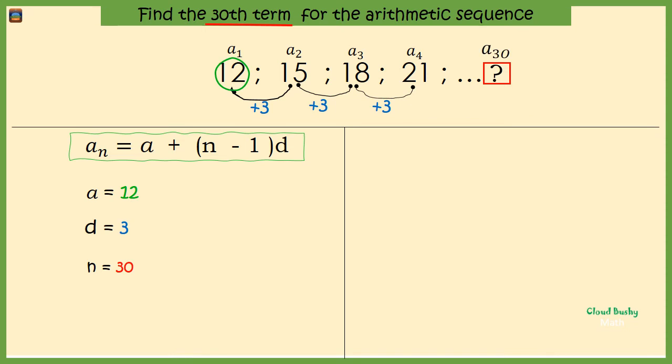We have a is 12 and d is 3. Let's substitute into the formula: aₙ is equal to a plus n minus 1 times d. So we have the thirtieth term is equal to 12 plus 30 minus 1 times 3.